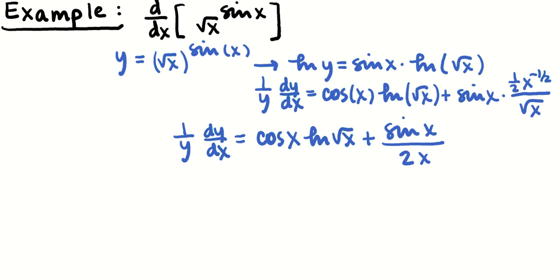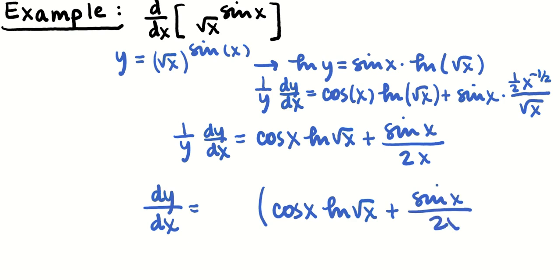Then I'm going to solve for dy/dx. I'm going to multiply y over here onto the cos(x) log(√x) plus sin(x) divided by 2x and multiply by y, which was √x to the sin(x).